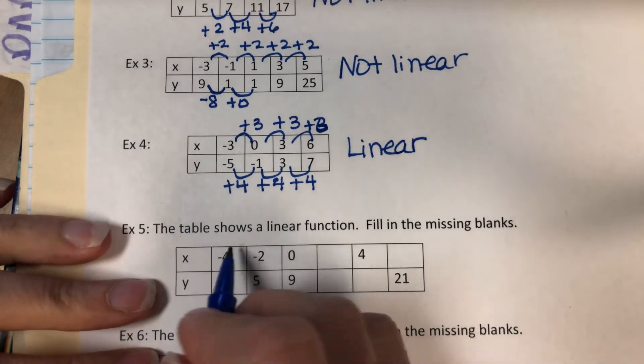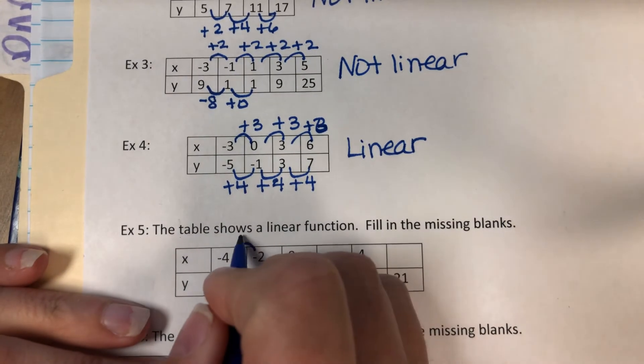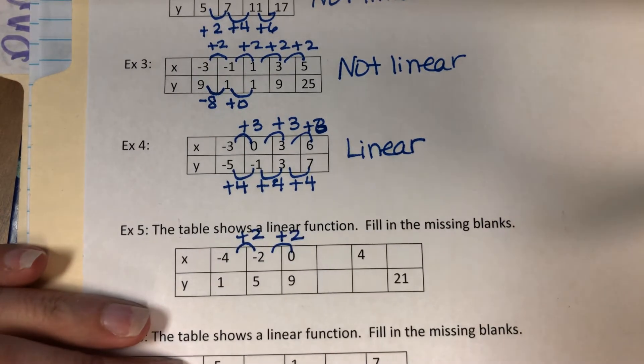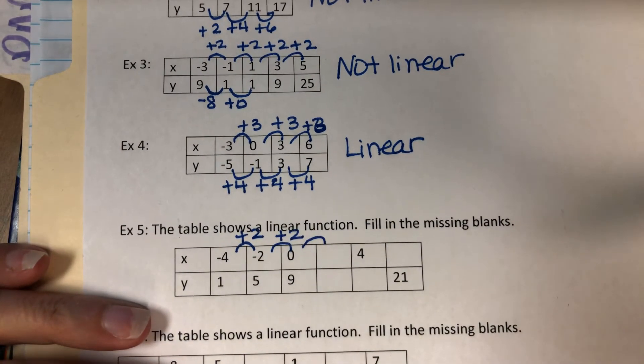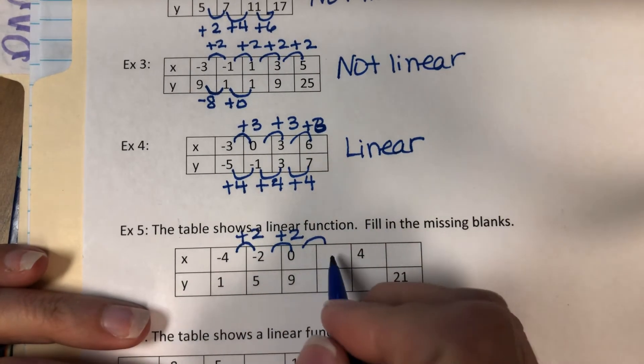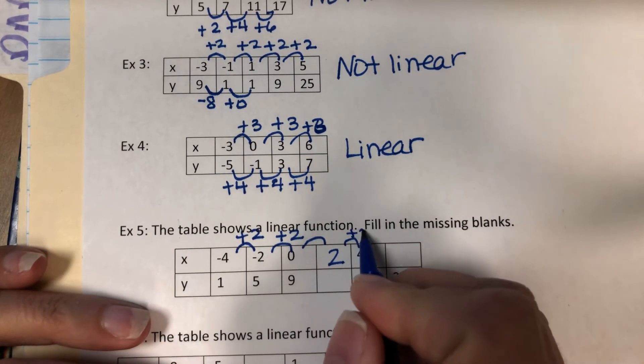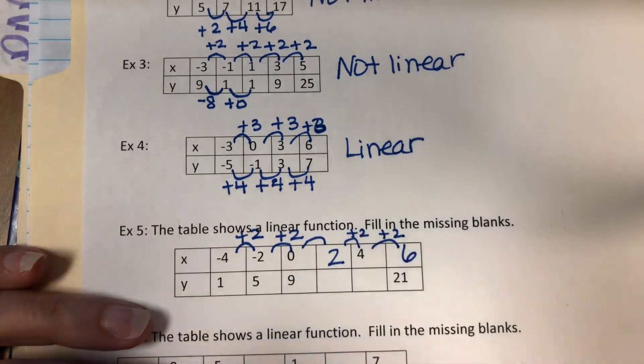Let's deal with our x's first. How do you get from negative 4 to negative 2? You add 2. Negative 2 to 0, you add 2. So that means between 0 and whatever that number is, I have to add 2. So what's 0 plus 2? 2. 2 to 4, I add 2. 4 to the next number, I add 2. So what does that next number have to be? 6.